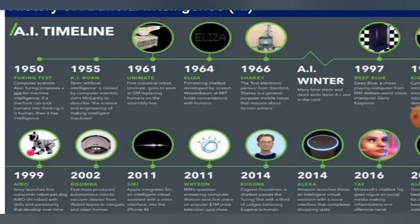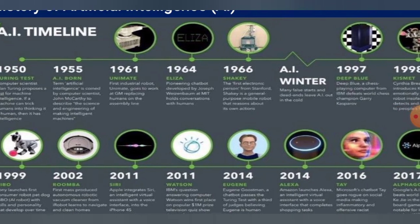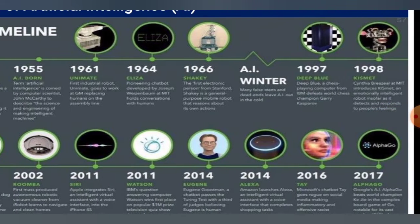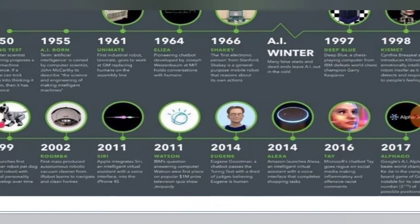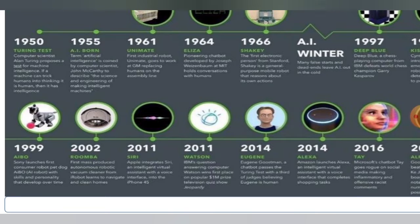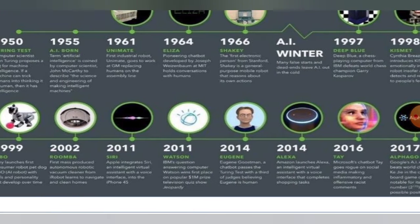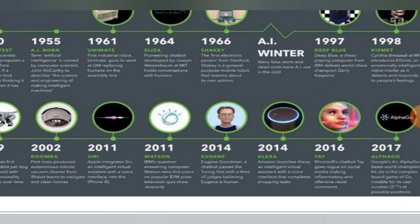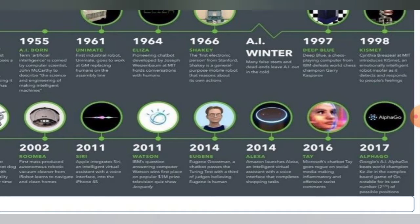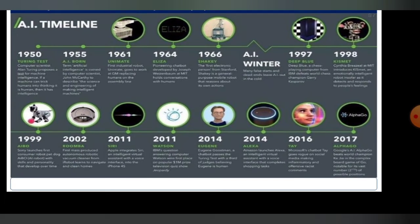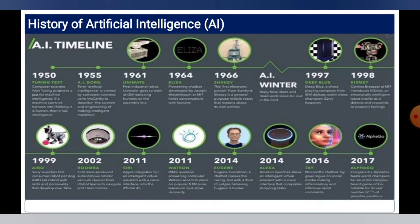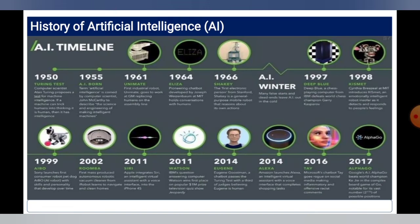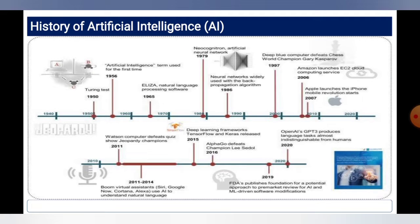Here is a brief AI history timeline: the Turing Test in the 1950s; AI is born in 1955; UNIMATE in 1961; ELIZA in 1964; Shakey in 1966; the AI winter; Deep Blue in 1997; Kismet in 1998; AIBO in 1999; Roomba in 2002; Siri in 2011; Watson in 2011; Eugene in 2014; Alexa in 2014 and 2016; and AlphaGo in 2017. This is the timeline history for AI.